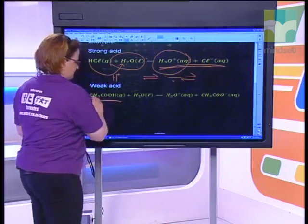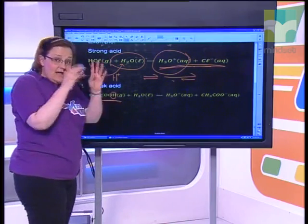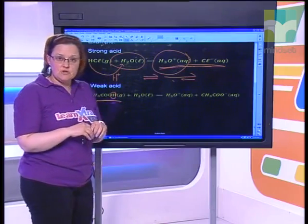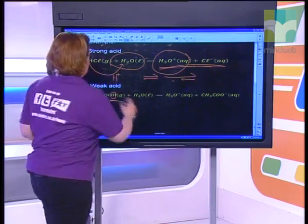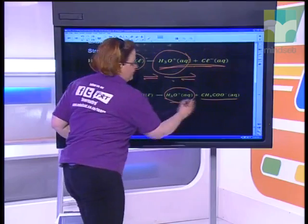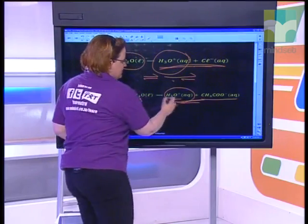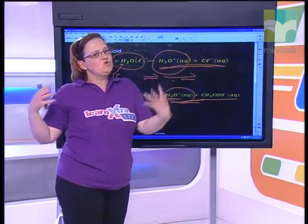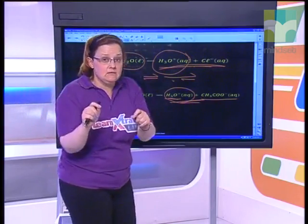Acetic acid, also known as ethanoic acid or vinegar — remember it's only the hydrogen at the end that's important, not the one bonded to the carbon. The hydrogen donates itself to the water, and once again we get H3O⁺ ions and CH3COO⁻. Because this is a weak acid, when it dissolves in water it does ionize, but we get very little product — very little H3O⁺.